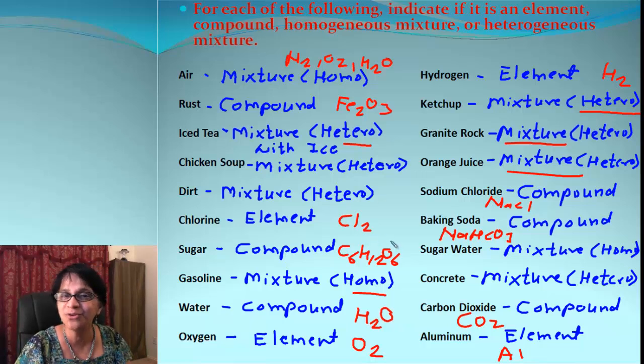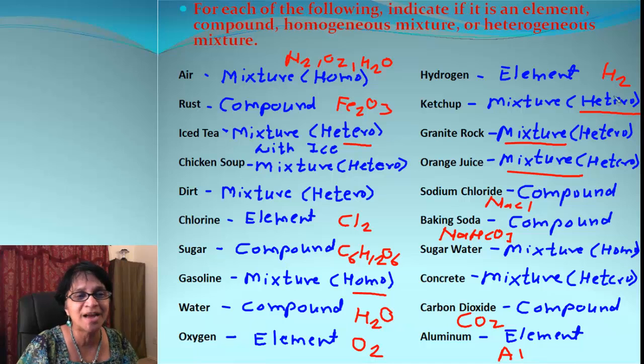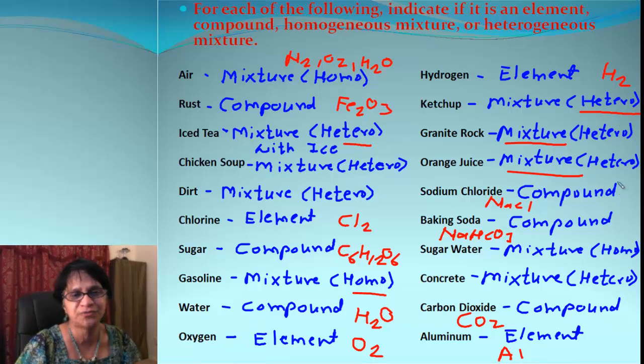Chlorine has formula Cl2. That makes it unique element there. Sugar has this complex formula and it has more than one element, so it's a compound. Gasoline is of course a mixture. There are different types of liquids, flammable liquids mixed up. Water has a formula H2O, more than two elements, so it'll be a compound. Oxygen is O2, one type of element. Hydrogen H2, only one type of atom, so it's an element. And then we keep on moving.